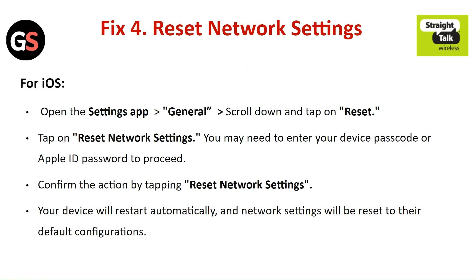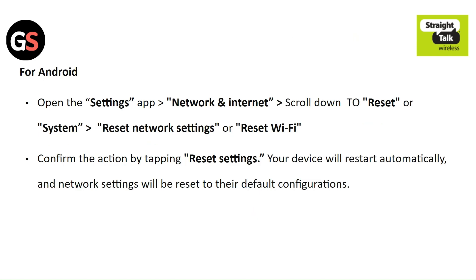Fix 4: Reset the network settings. For iOS, open the Settings app, then General. Scroll down and tap on Reset, then tap on Reset Network Settings. You may need to enter your device passcode or Apple ID password to proceed. Confirm the action by tapping Reset Network Settings. Your device will restart automatically and network settings will be reset to the default configurations.